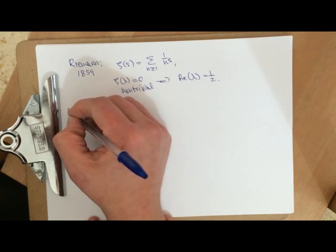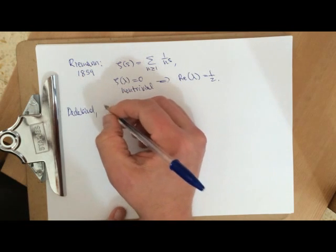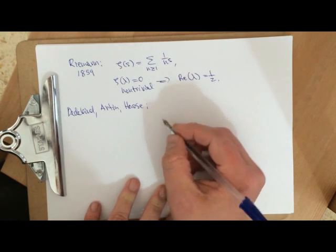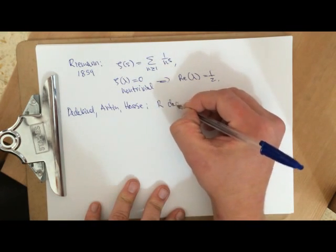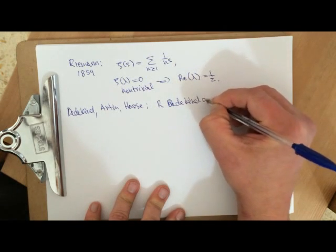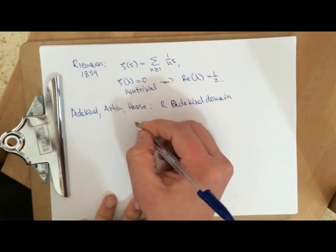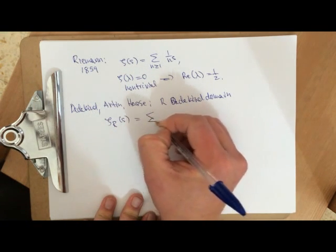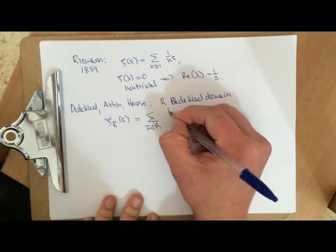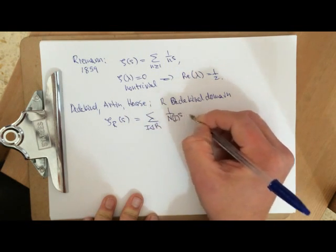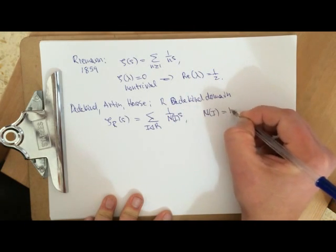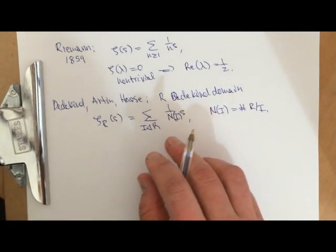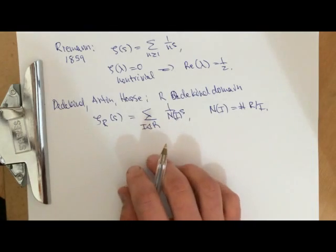Let's recall that Dedekind in the late 1800s, along with Artin and Hasse, considered, for a Dedekind domain R, the zeta function ζ(R, s), which is a sum over ideals I of the cardinality of R mod I to the s. So they looked at these sums over ideals.